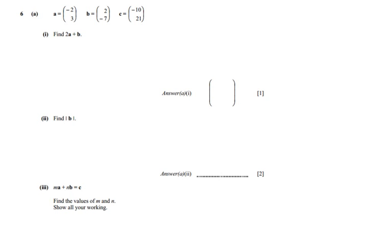So what's going on? They say A is (-2, 3), B is (2, -7), C is (-10, 21), and we have to answer three questions about that. This is a paper 2 type of question, so relatively short.